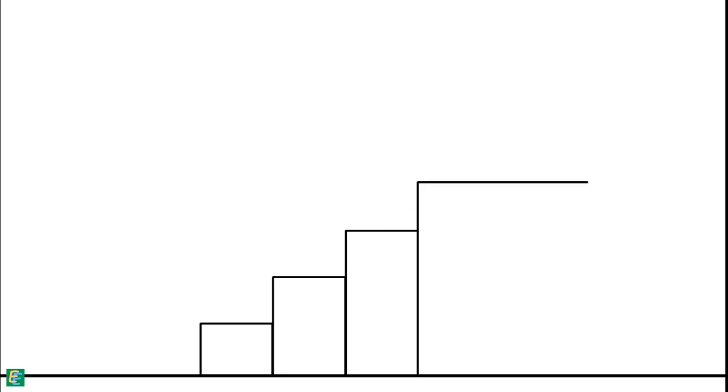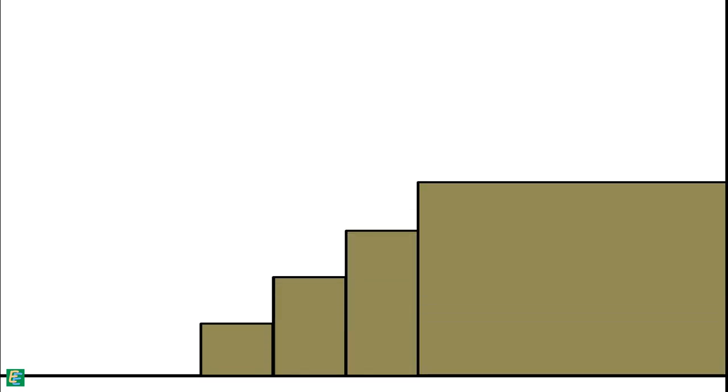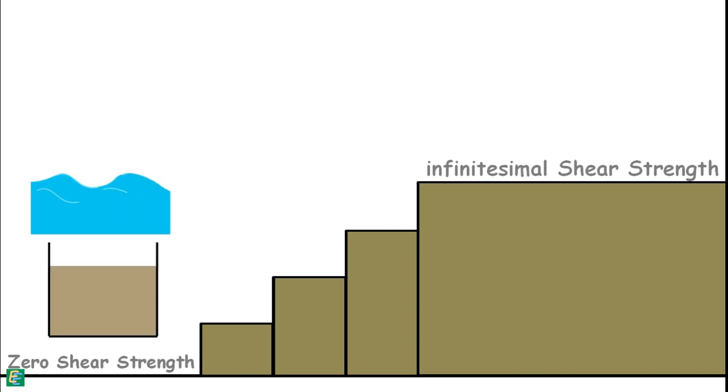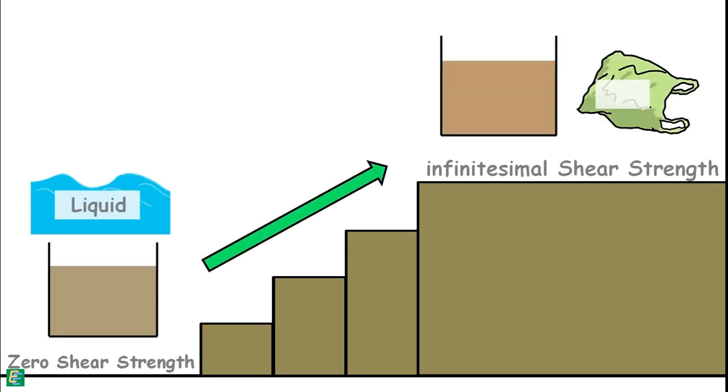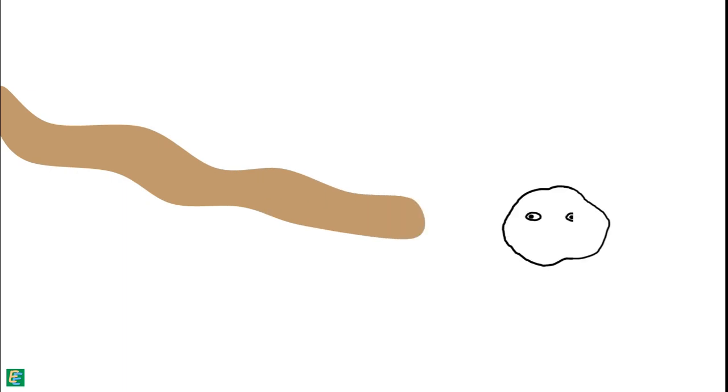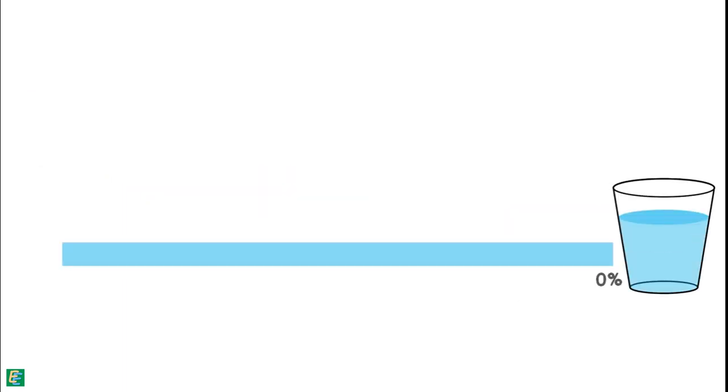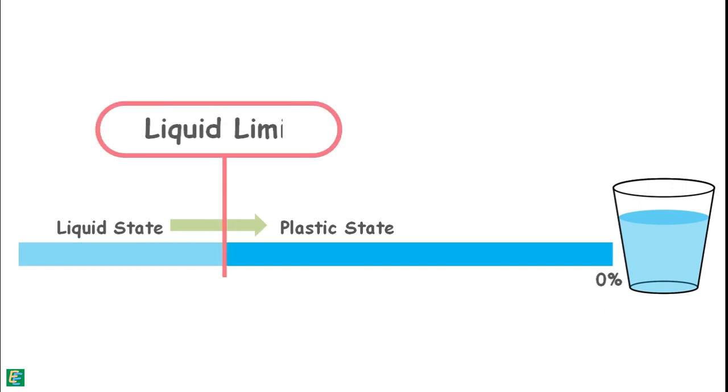There comes a stage when the sample changes from possessing no shear strength to possessing infinitesimal shear strength and changes from liquid to plastic state. Soil stops being liquid and does not flow. The water content of the soil at that stage is known as the liquid limit.